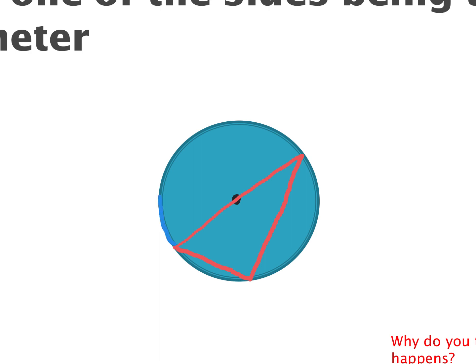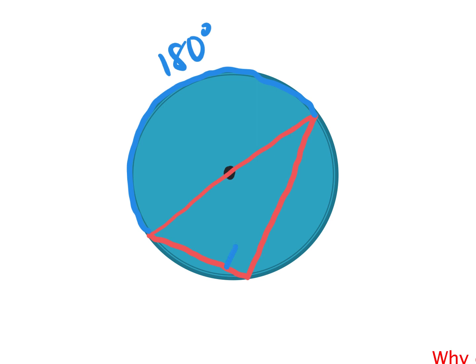This arc has to be 180 degrees on everyone's paper — the arc that is formed by the diameter. That arc is formed by this angle right here. And that angle, if the arc is 180, must be half of it. Half of 180 is 90 degrees. That happened for everyone because we were all told we had to have a diameter as one segment of our circle.